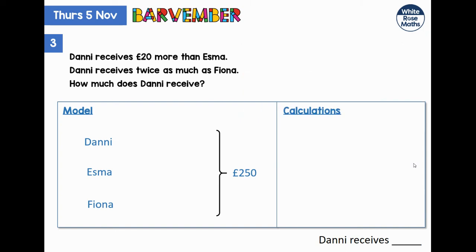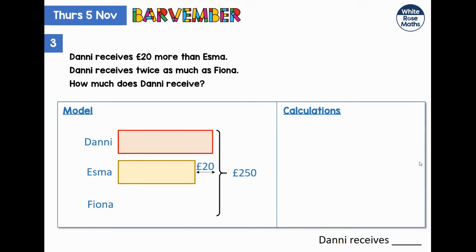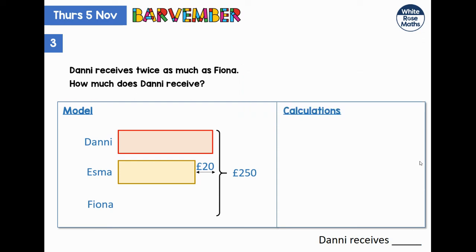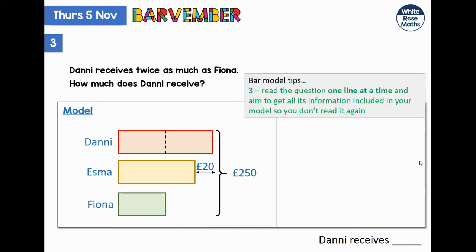We don't need to read that first line again. Danny receives £20 more than Esma, so Danny's bar is going to be bigger than Esma's. There's our double-headed arrow to indicate the difference — notice how that arrow starts at the end of one bar and finishes at the end of the other. Danny receives twice as much as Fiona. We've split Danny's bar into two halves and made sure that Fiona's bar is the same size as one of those. So we've included everything.